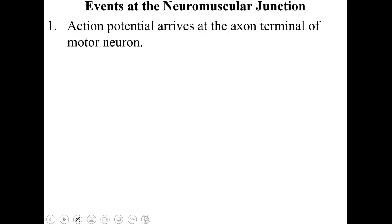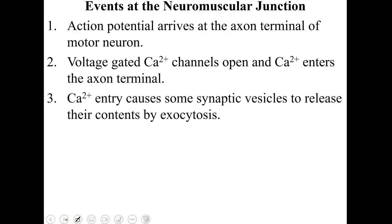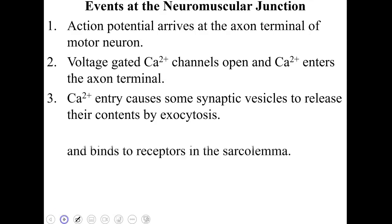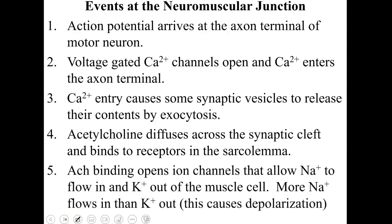The first thing that happens: the action potential arrives at the axon terminal of the motor neuron. Next, the voltage-gated calcium channels open up and calcium enters the axon terminal. That calcium entry causes synaptic vesicles to release their contents by exocytosis. Then the acetylcholine diffuses across the synaptic cleft and binds to the receptors in the sarcolemma. Once the acetylcholine binds, it opens ion channels that allow sodium to flow in and potassium out of the muscle cells.